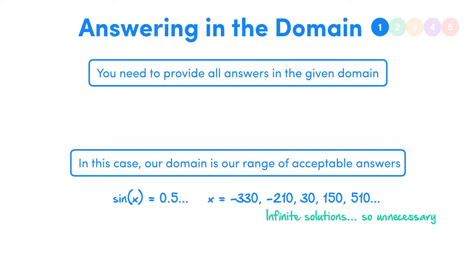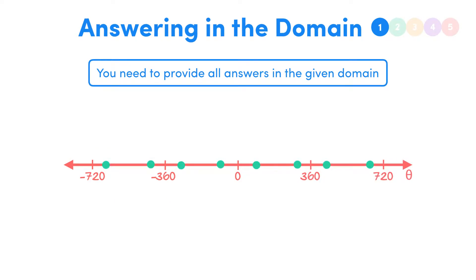So say we solved an equation, and these are all our answers, but the domain was for theta between 0 and 360, we would only take these answers, the ones that fall in that range. So keep that in mind as we jump into our first question.